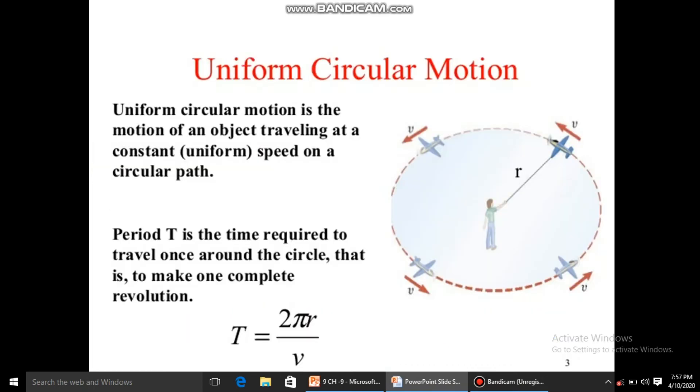Uniform circular motion is the motion of an object traveling at a constant speed on a circular path. Moving at the same speed in a circular path repeatedly, that is called uniform circular motion.